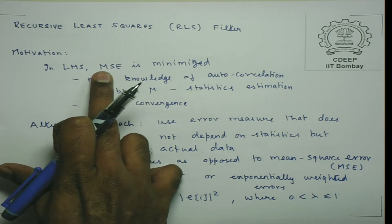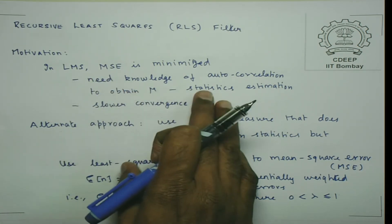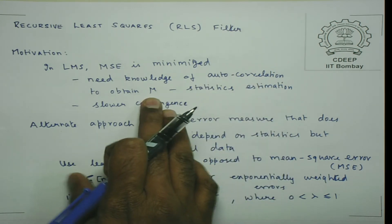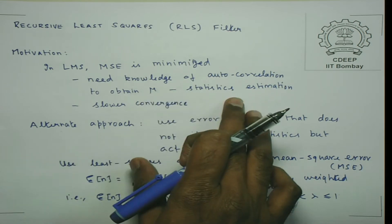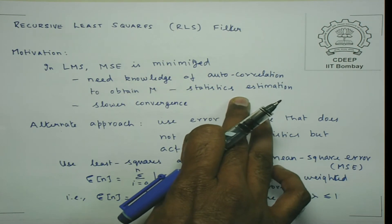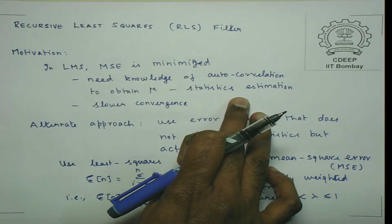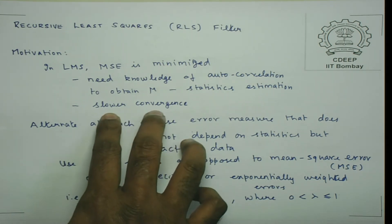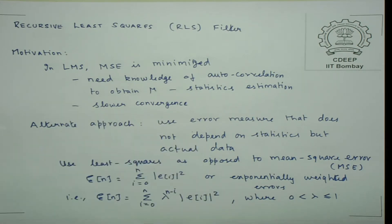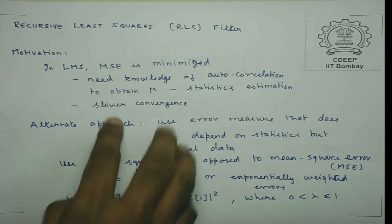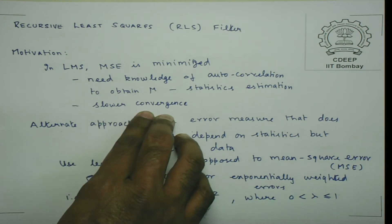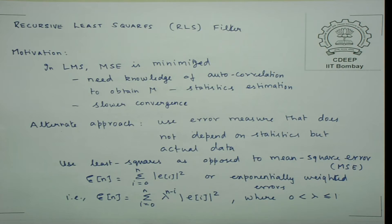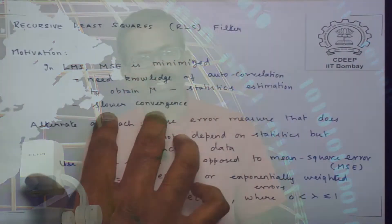The main motivation to look at RLS, or the recursively least square filter, is that in LMS we minimize the mean square error — the word 'mean' here indicates a statistical quantity. This needed knowledge of either the autocorrelation to obtain mu or some other statistical estimates in terms of convergence. Another aspect is convergence speed — in LMS the number of steps to obtain the optimal weight can be large, and if the signal changes before convergence, the algorithm has to restart.